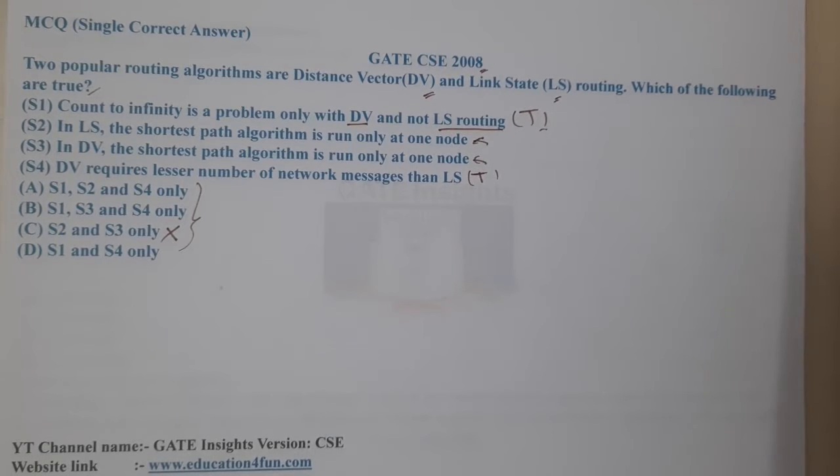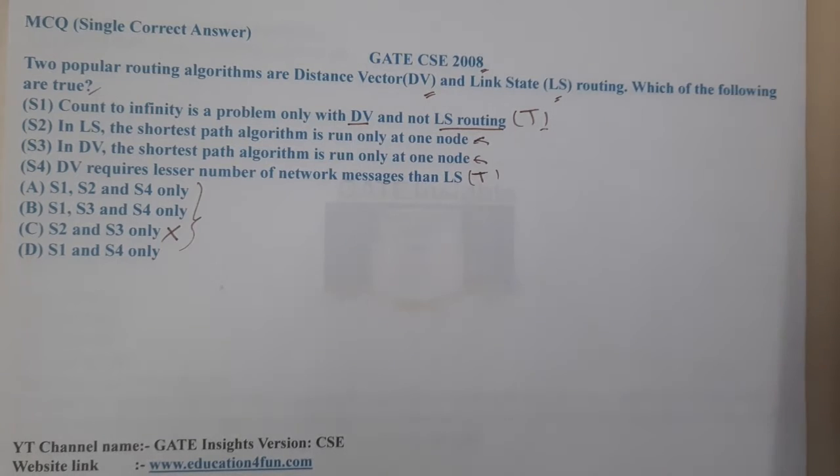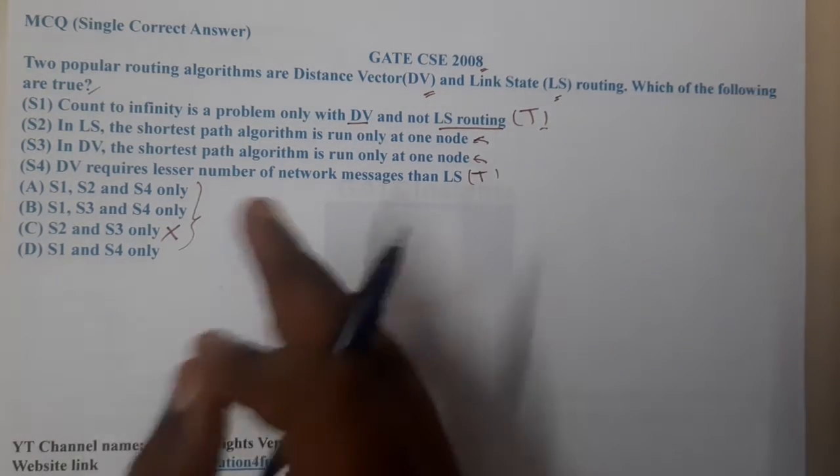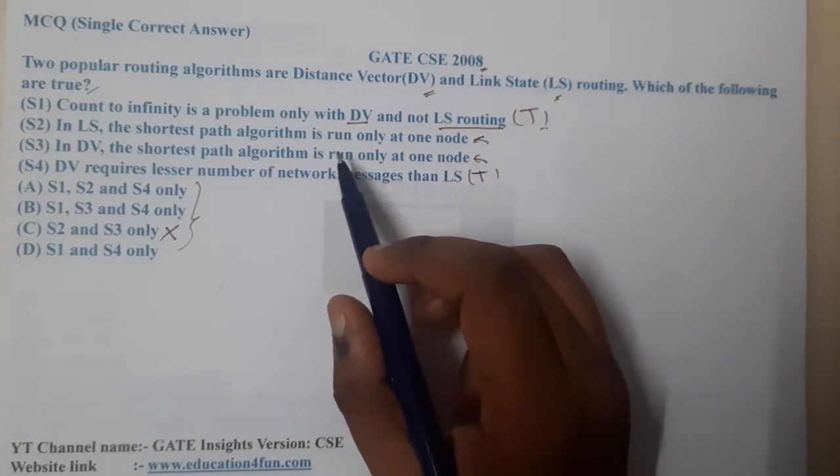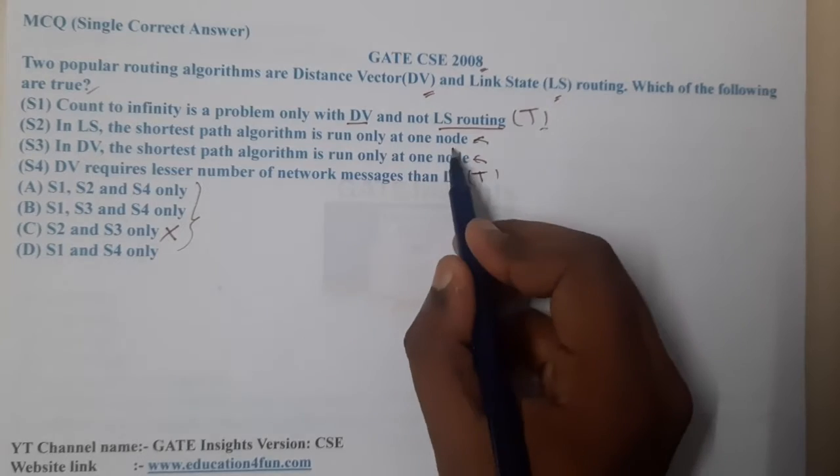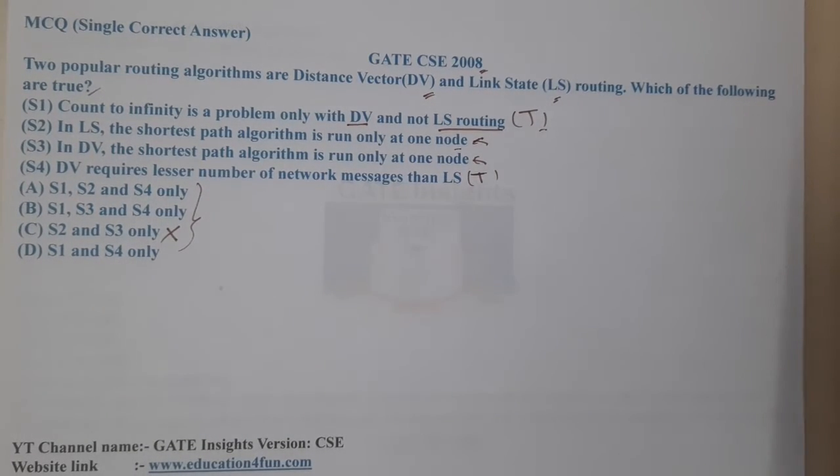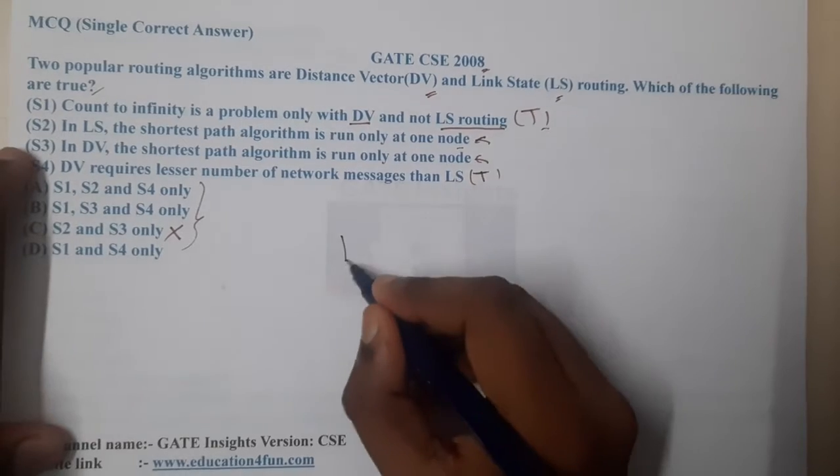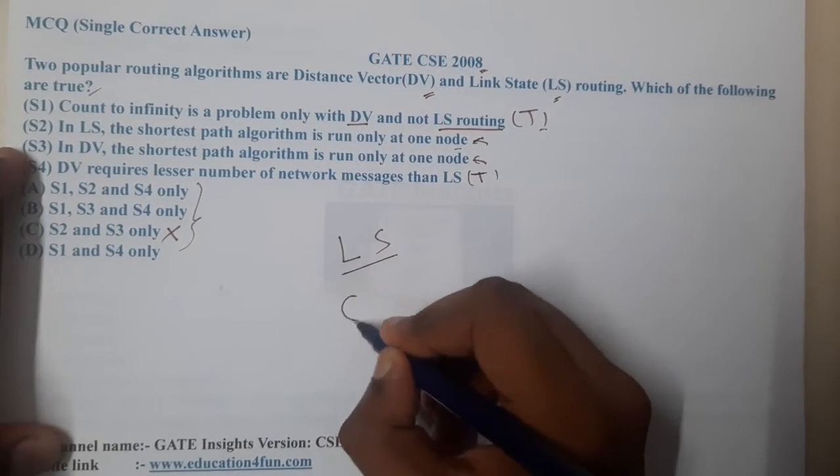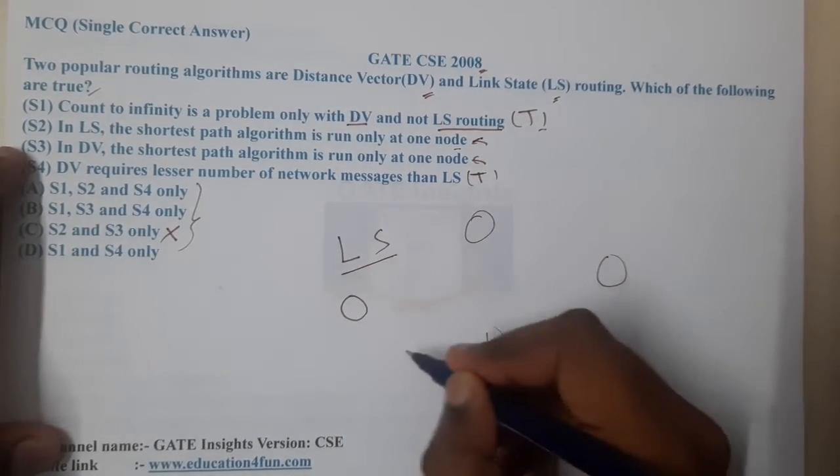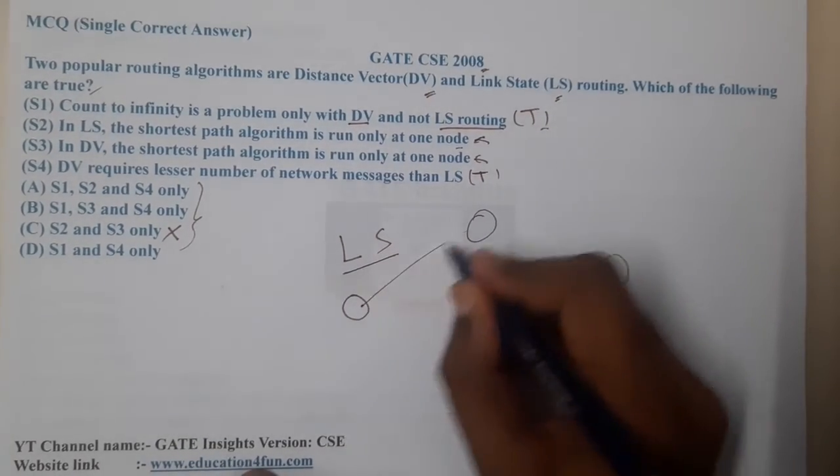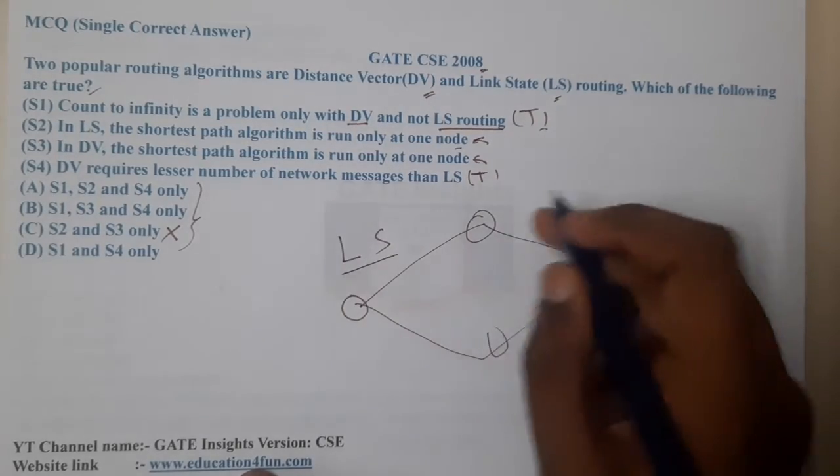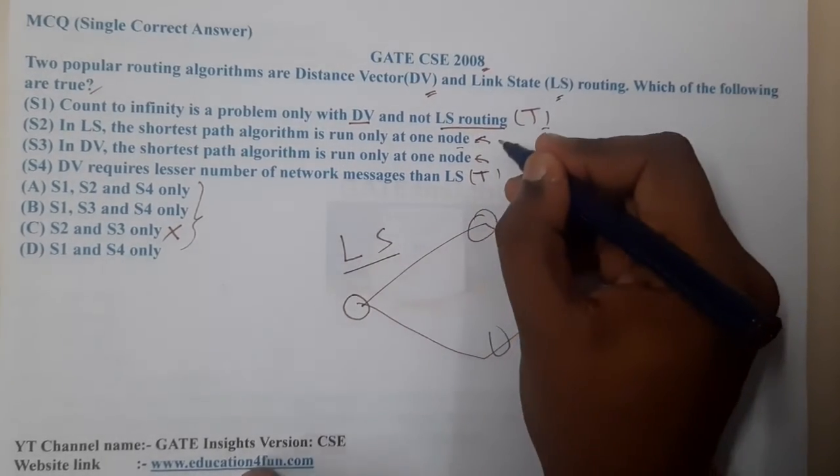Let's try to understand what exactly it is saying. In Link State routing, the shortest path algorithm is run only at one node. If you recall, in Link State routing we apply the shortest path first - the all pairs shortest path at each and every node. From this node we find the distance for each and every node. So basically it is not applied at one node. With that understanding, you can say it is false.